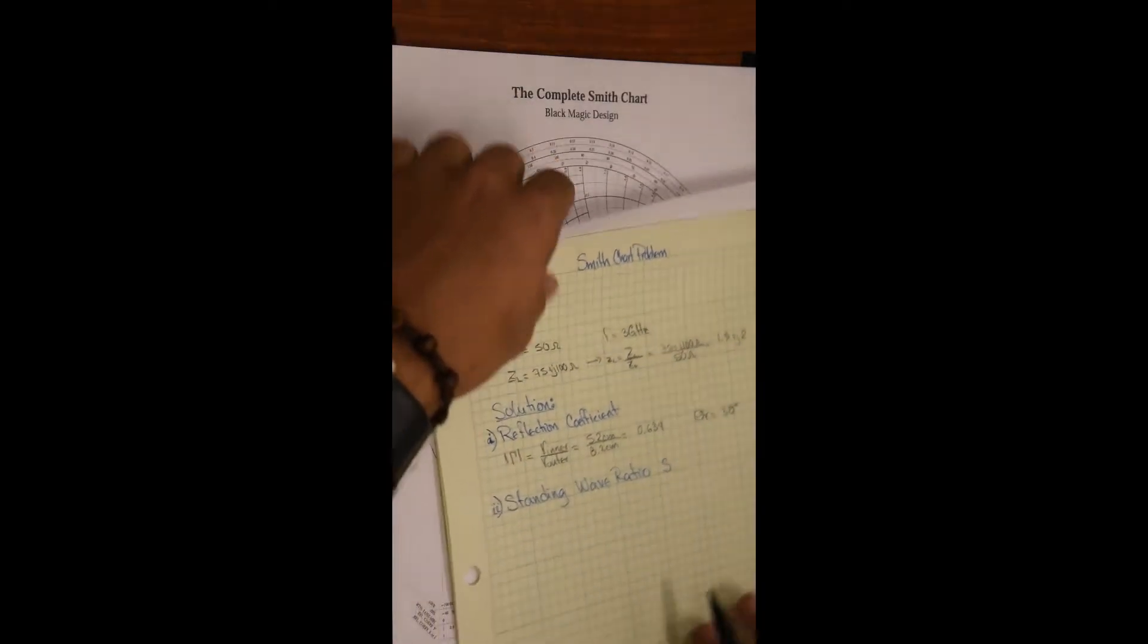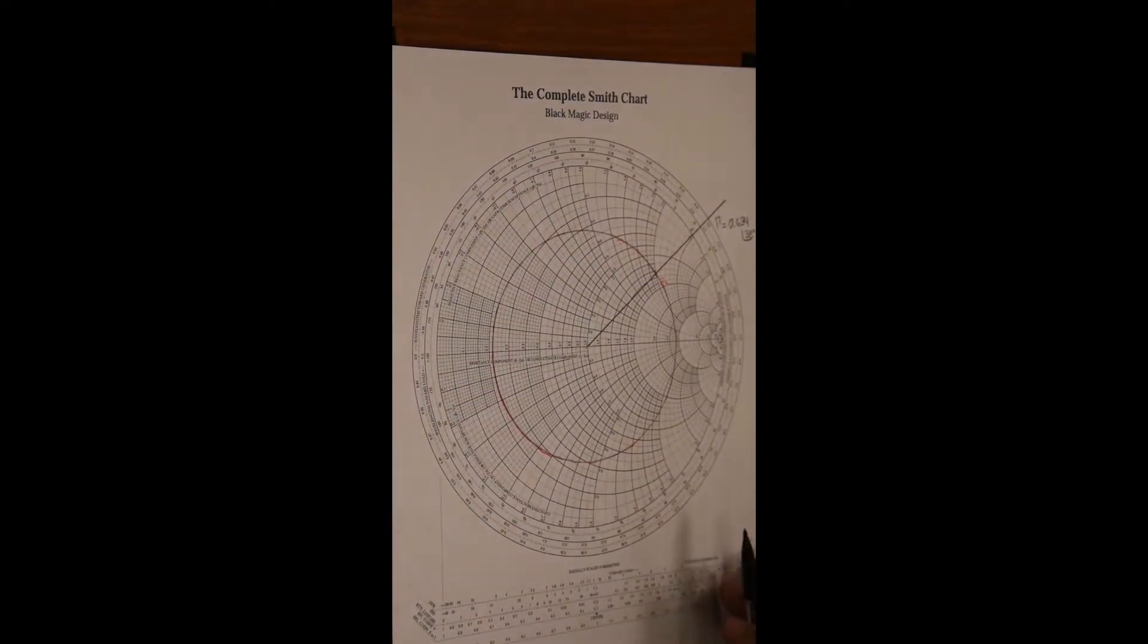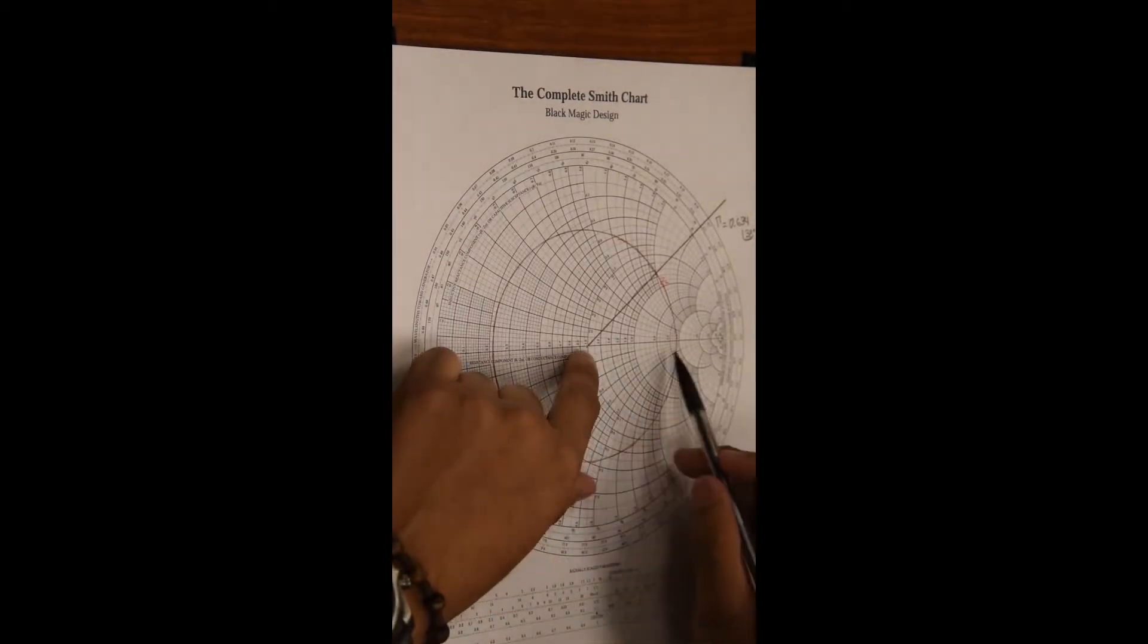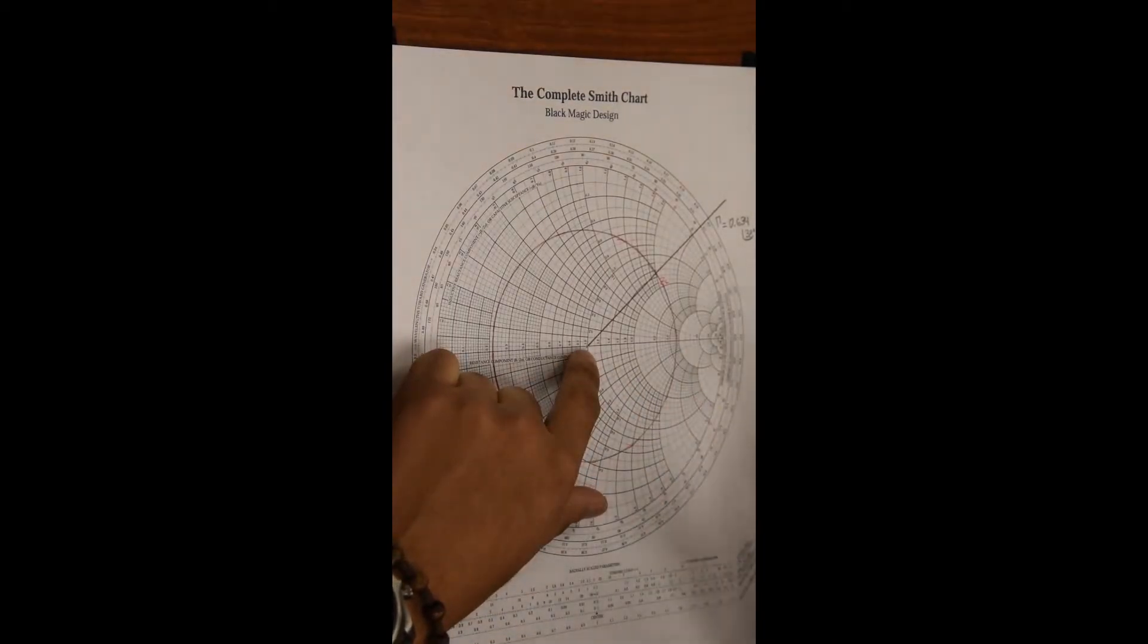The voltage standing wave ratio in our Smith chart will be determined by the radius of our SWR circle on the right-hand side.